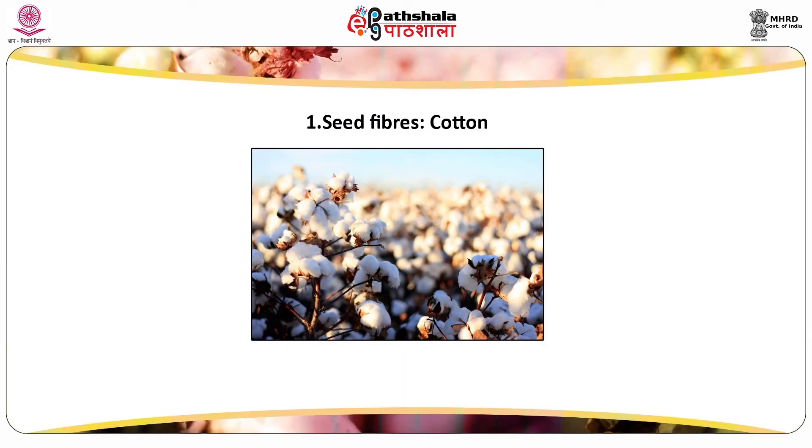The first plant fiber is seed fiber: cotton. Cotton is of tropical origin but can also be cultivated successfully in temperate climates with well-distributed rainfall. Cotton is a fiber that grows from the surface of seeds in the pods or bolls of a bushy mallow plant. Each fiber is flat, twisted and ribbon-like with a wide inner hollow — an elongated single cell composed of 90% cellulose, 6% moisture, and the remainder consisting of natural impurities. A protective wax-like coating is present at the outer surface of the fiber.